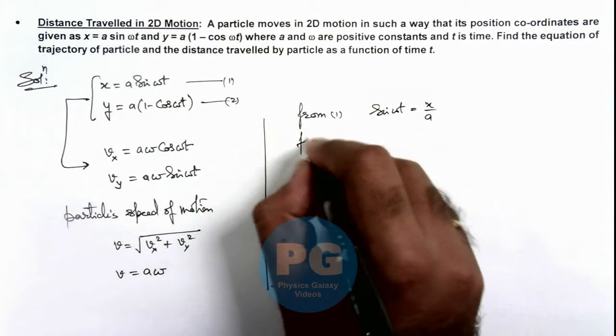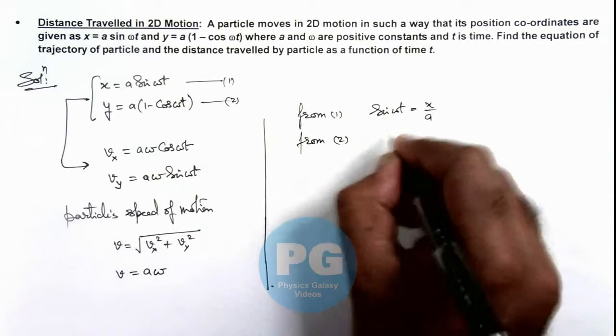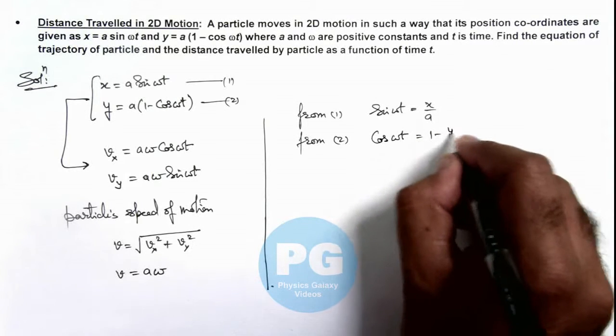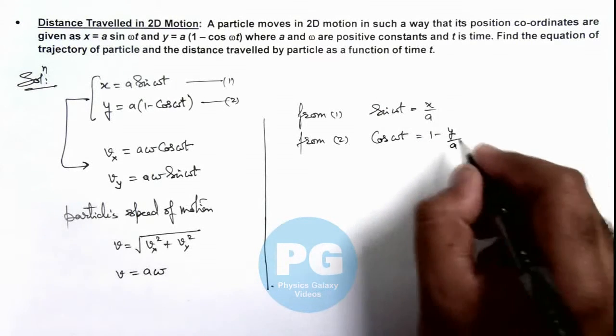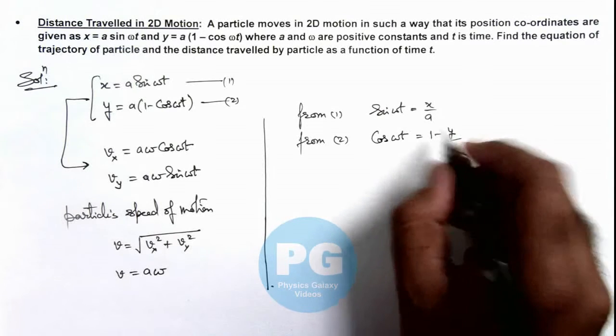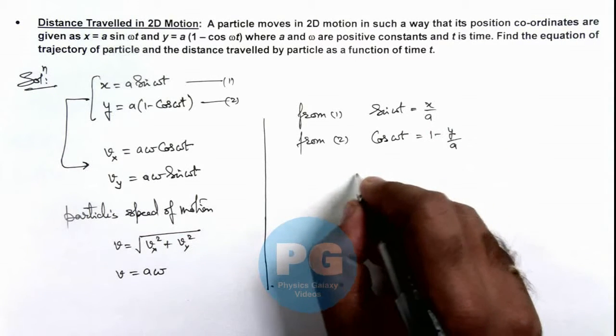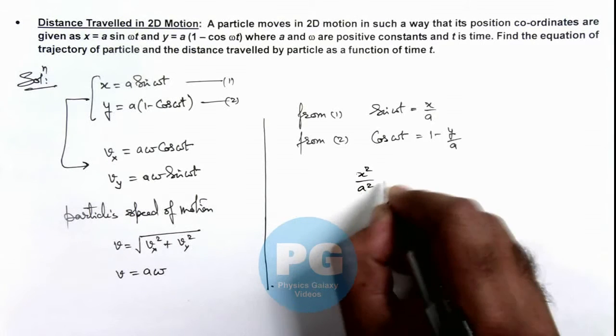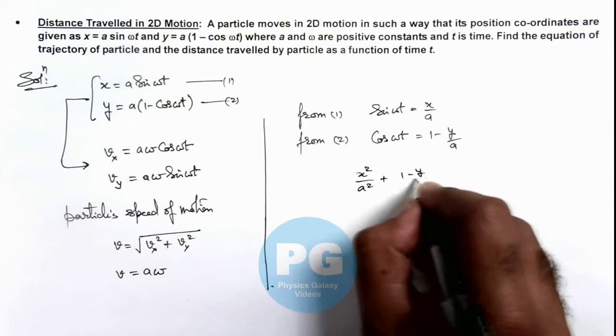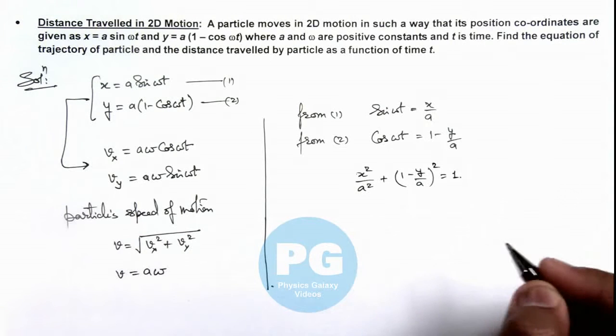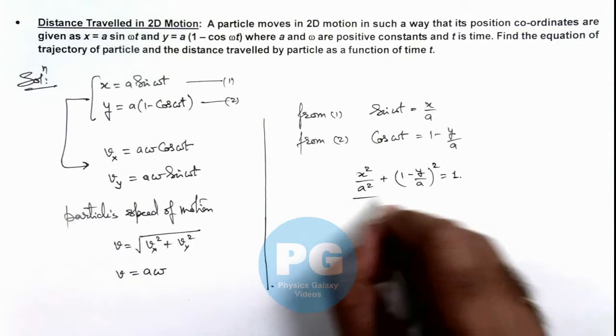And from equation 2 we are getting cos(ωt) as 1 - y/a. So in this situation, if we square and add these two terms, we'll get x²/a² + (1 - y/a)² = 1. So this is the equation of trajectory we are getting as a result.